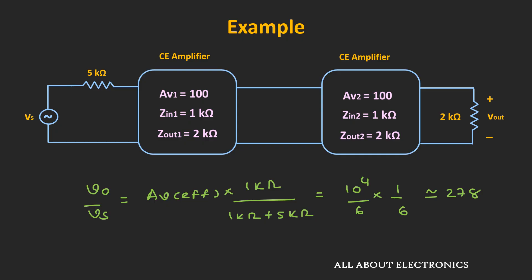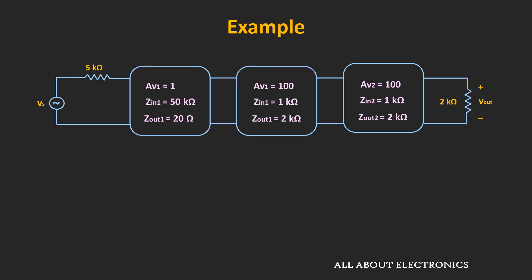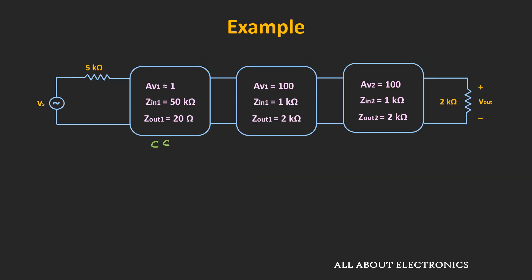When the source impedance is high, the common collector or emitter follower can be used as a first stage for impedance matching, because the emitter follower has high input impedance and low output impedance. Adding a common collector stage just before the common emitter stage prevents the reduction in voltage gain. Similarly, if the load impedance is very low, the emitter follower can be used as the last stage to drive such a load. Depending on the source or load impedance, the emitter follower can be used as a buffer at the beginning or end of the cascaded connection, but it is never used as an intermediate amplifier because its gain is less than unity. At high frequencies, the common base amplifier can also be used as a first stage for impedance matching.